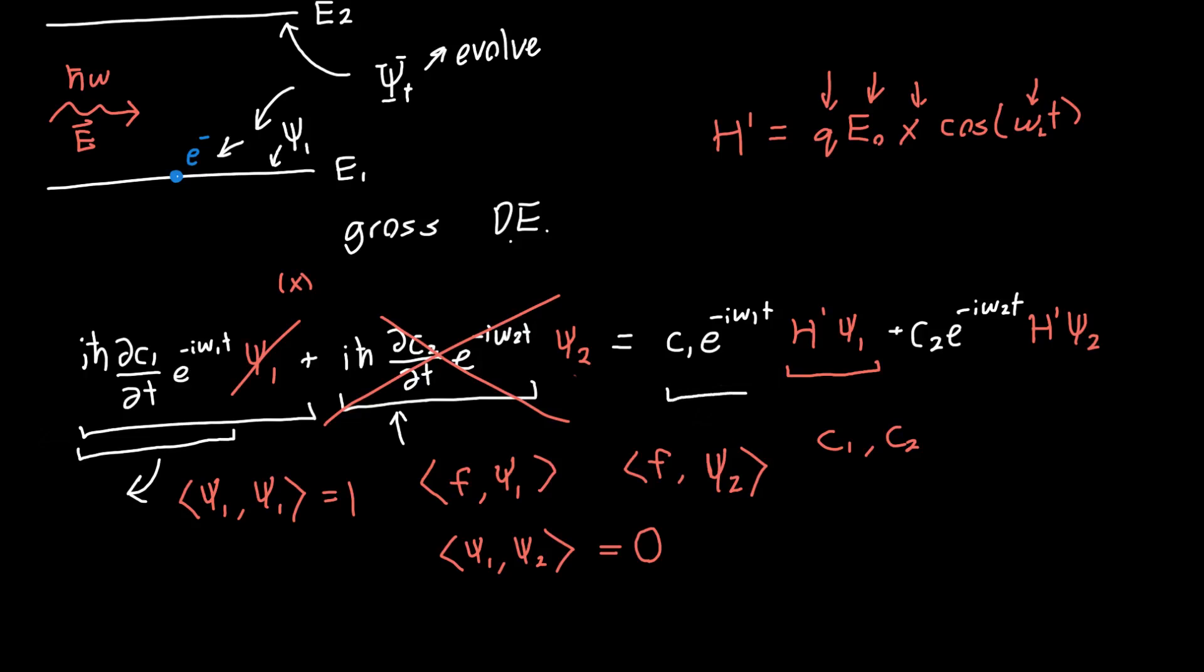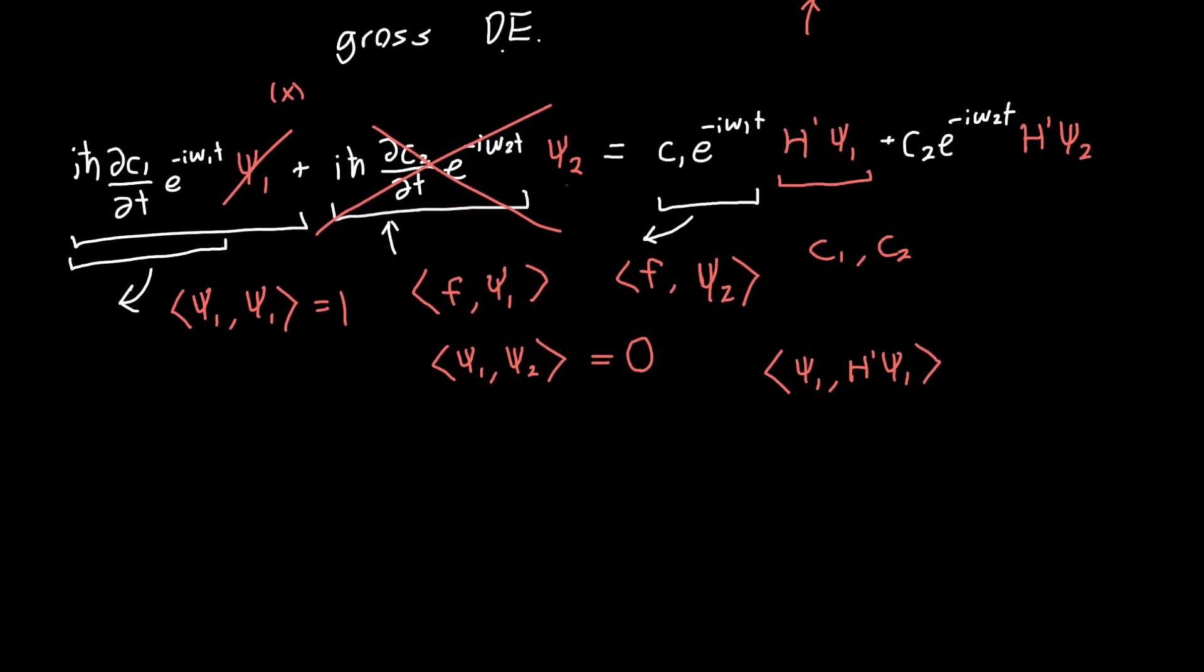What about this third term, this first term on the right-hand side? We can pull out all the functions of time, and then we want to take the inner product with psi 1 and h prime psi 1. We actually have a function or a description of what h prime actually is. We can write it down. What we actually want to take the inner product with is psi 1 and h prime, which is q e naught cosine of omega t times x, and then this is multiplied by psi 1. We can pull this out front, and we just need to take the inner product of psi 1 and x times psi 1.